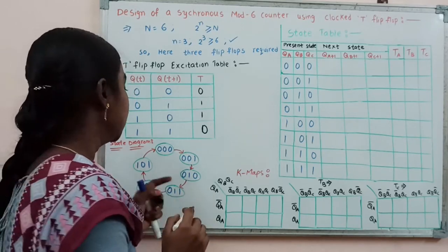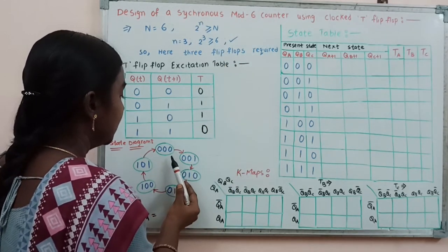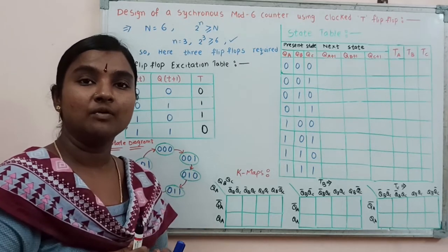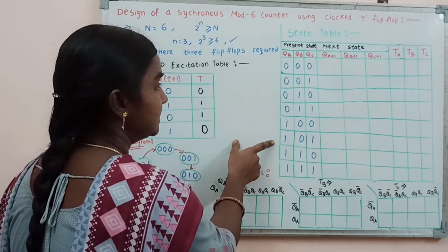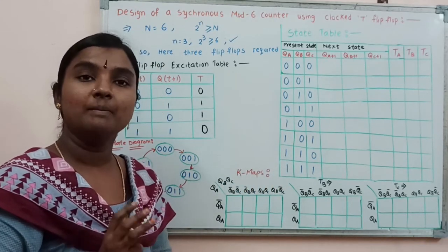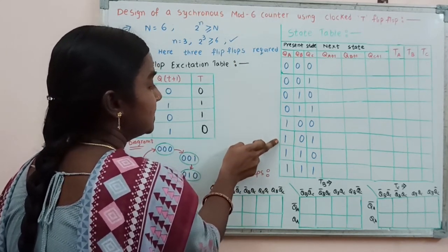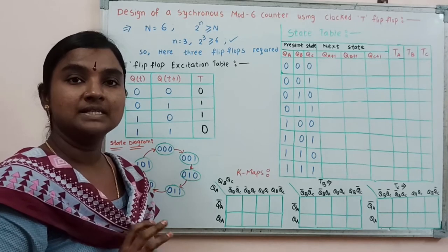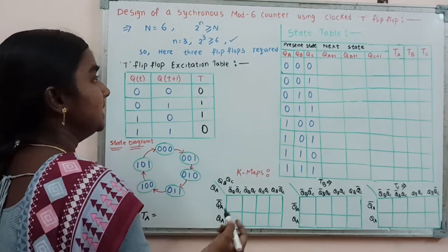Now we find the state diagram. The number of states is 6, so we use the first 6 binary states. With 3 binary bits, there are 8 possible states from 000 to 111, but for mod 6 we use only the first 6 states from 000 to 101.